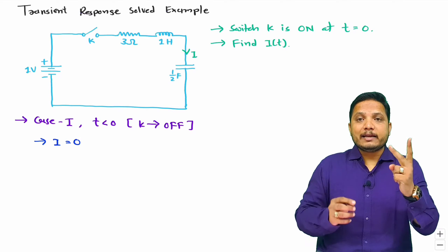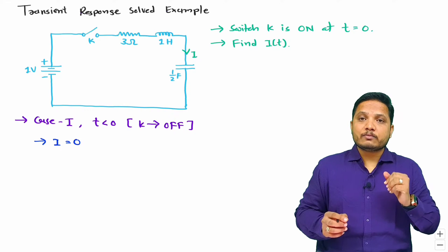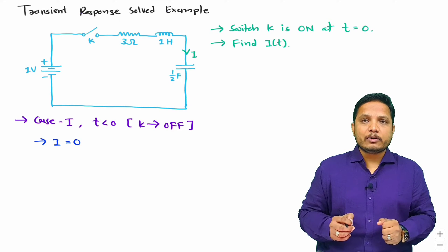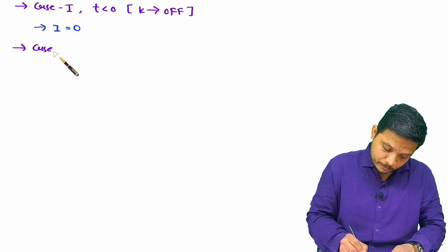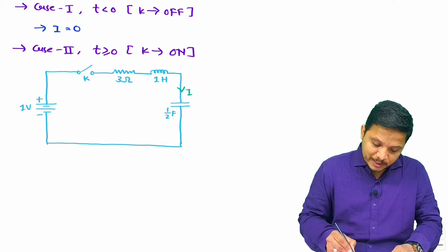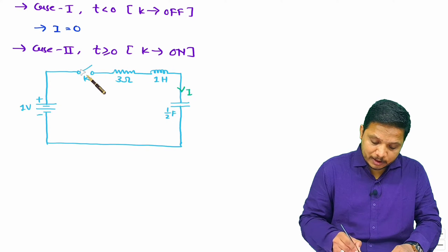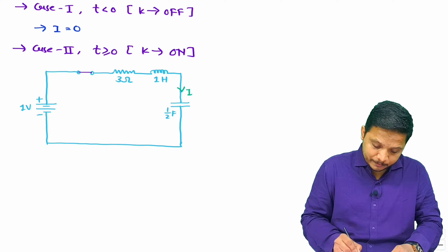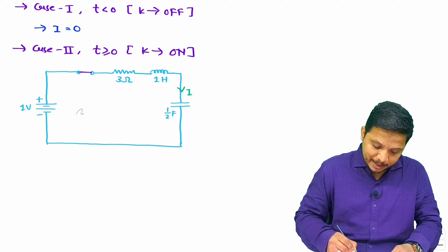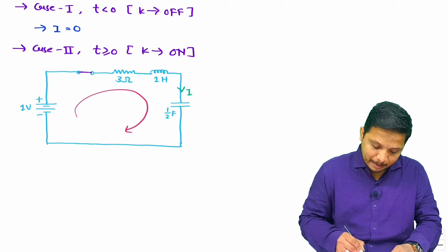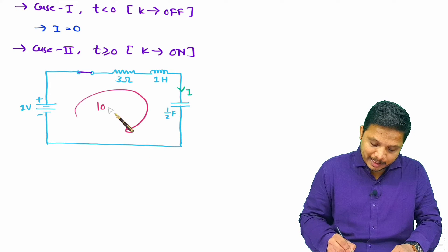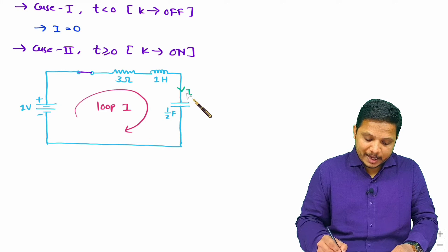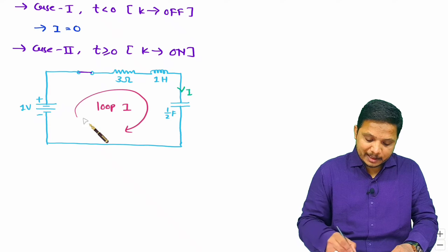Now let us consider the second case: for t greater than or equal to zero, the switch is on. As the switch is on, current will flow in this loop because of the battery. Let us say this loop current is i. To identify the value of i, we will apply KVL in this loop.